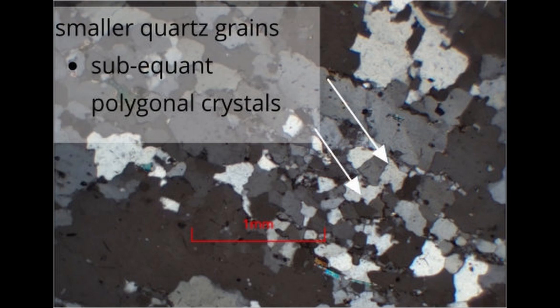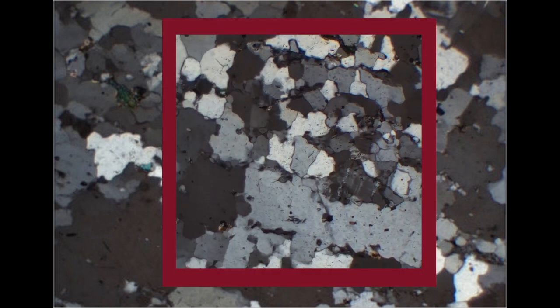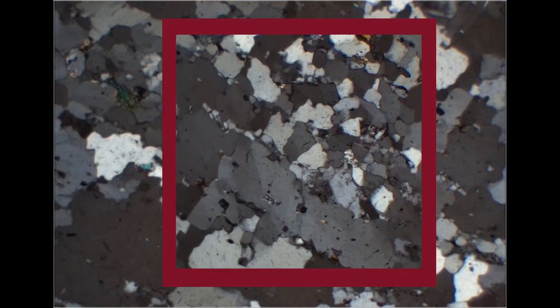The smaller quartz crystals form polygonal crystals that are sub-equant, that is, almost all axis of the crystal are the same length. As the stage is rotated, these crystals show uniform extinction and so are strain free.